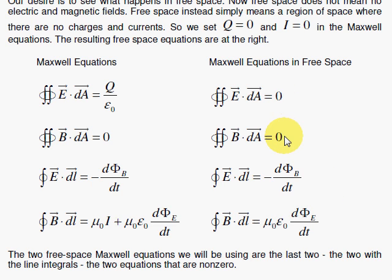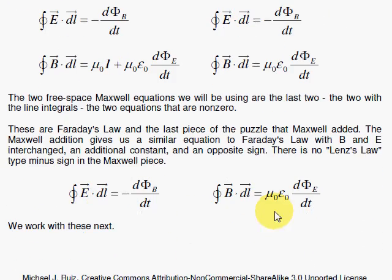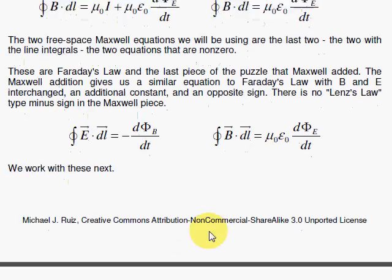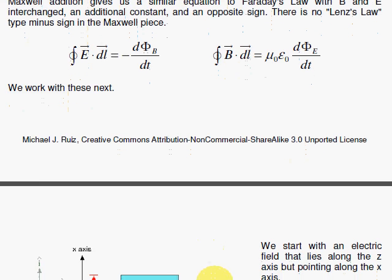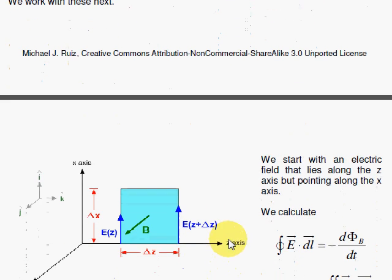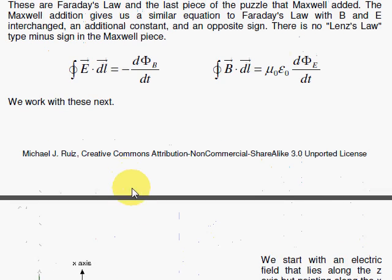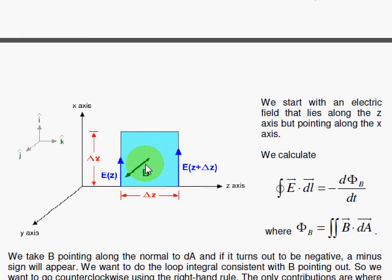So we have two equations that are zero and two have fluxes there. So let's look at those two equations here, and we'll set up the first one with an electric field. We will start with an electric field in space. We're going to go around here, a loop, and worry about a magnetic flux through the center, the changing magnetic flux.